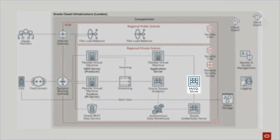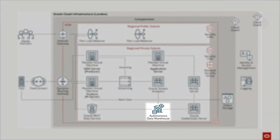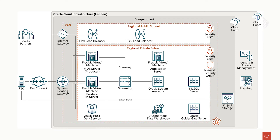What has Autonomous Data Warehouse done for your architecture? It helps us provide fast analytics for further data manipulation, and it's a data source for all the REST APIs we expose to the media partners. We also have MySQL in our architecture as our legacy database, and we use Oracle GoldenGate to replicate data from MySQL to Oracle ADW. Our long-term plan is to replace MySQL with ADW eventually.